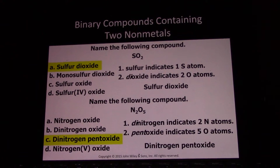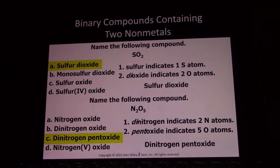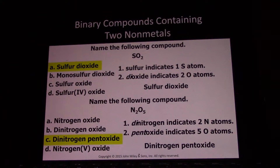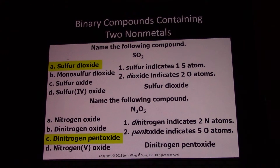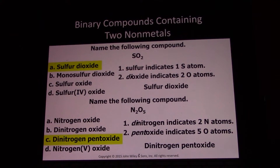So we have two totally different systems — how do you know which to use? If you have a metal and a nonmetal, you'll have an ionic compound and use the ionic rules. If you have two nonmetals, or a metalloid and a nonmetal — for example, silicon tetrachloride — you have a molecular compound and you'll use the Greek prefix rules.